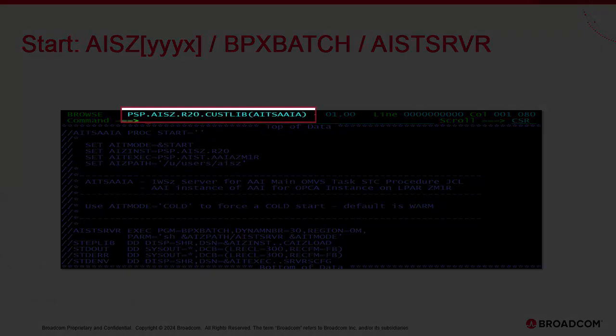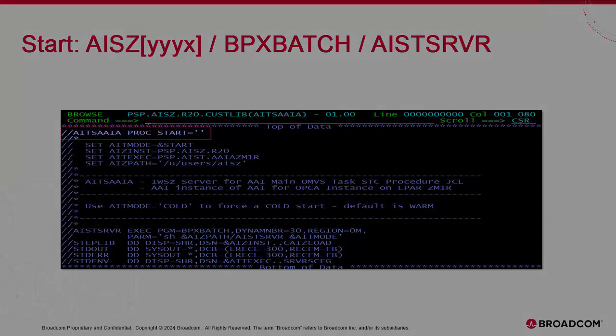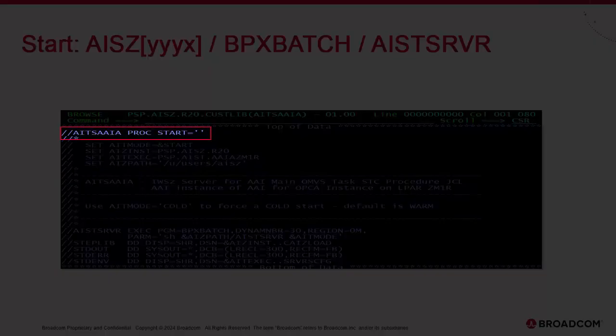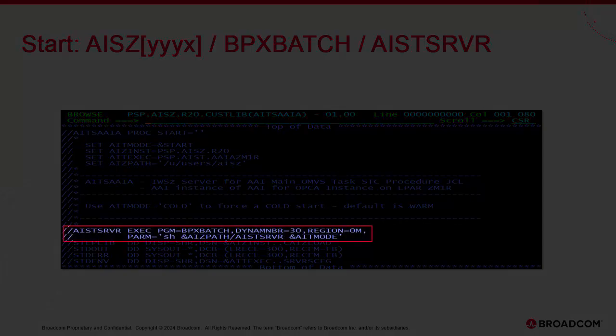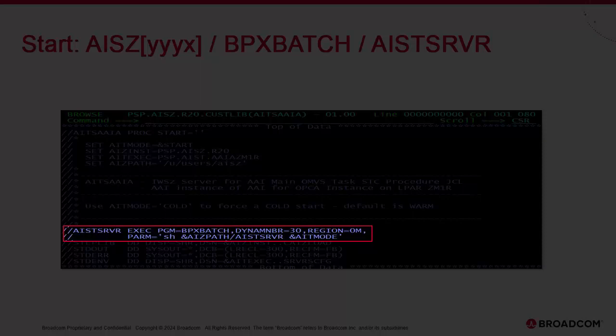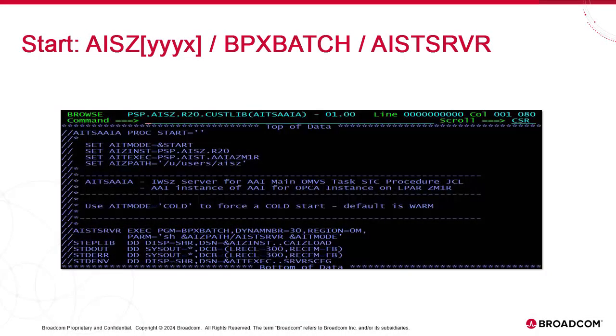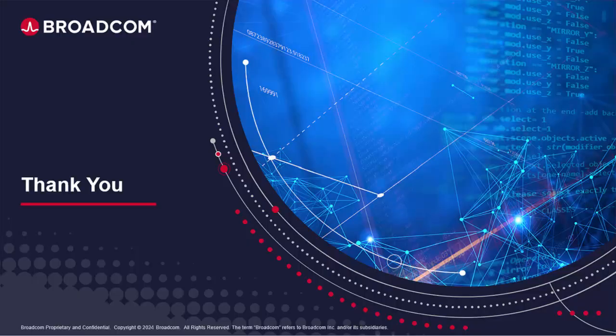This is the Custlib member where the execution JCL can be found. It must be copied to a system procedure library. This is the default generated name for the server STC based on the instance code XXXY, which you would specify to automation so it starts automatically. The important section is this statement — it describes the execution of PGM BPX batch, invoking the AIST SRVR execution module passed as a parameter.